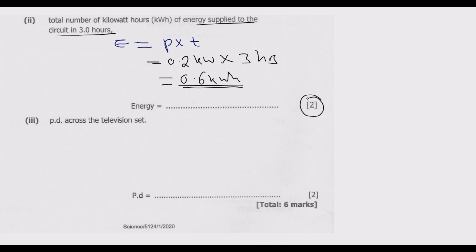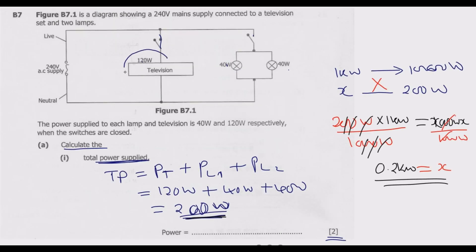Part 3: calculate the potential difference across the television set. So we're looking for the potential difference. The potential difference can be found using the power formula. We know that power equals voltage times current. We know the total voltage, but to find the potential difference across the TV set, we first need to know the current passing through the circuit.